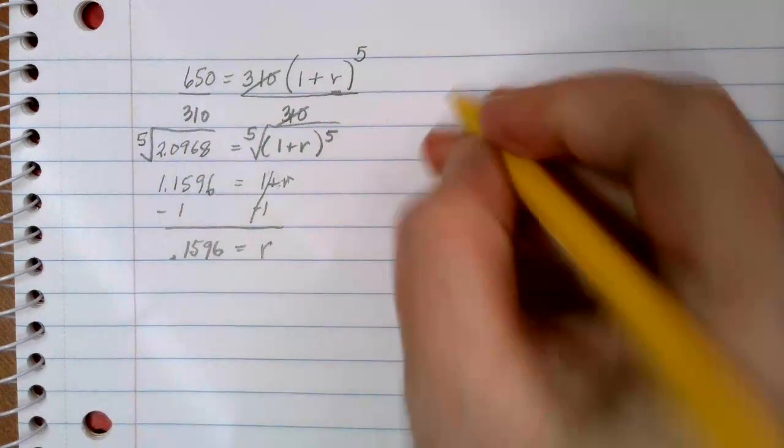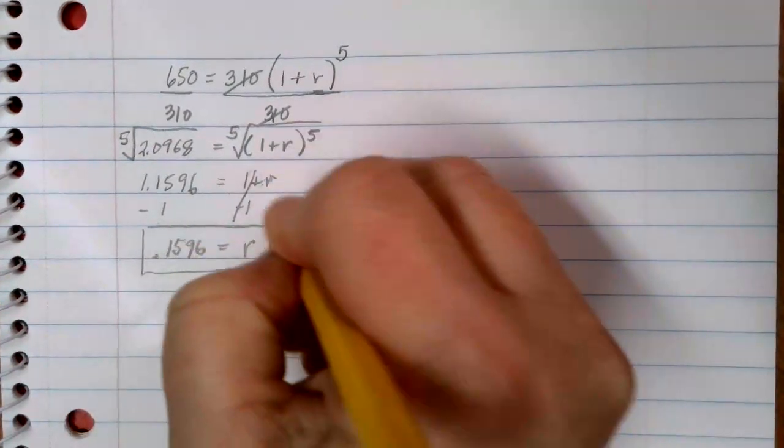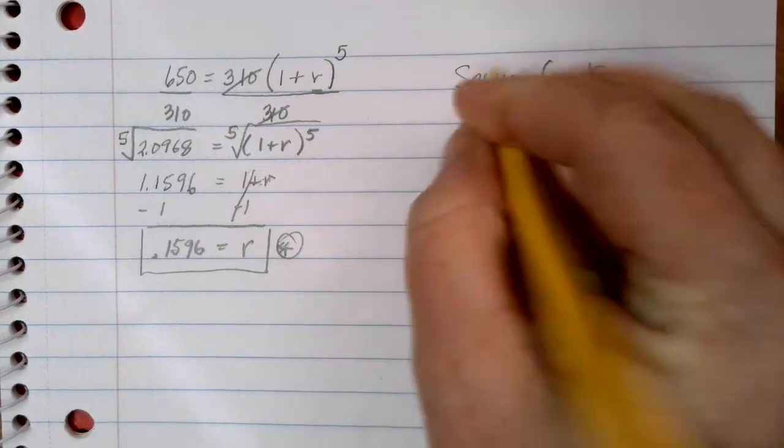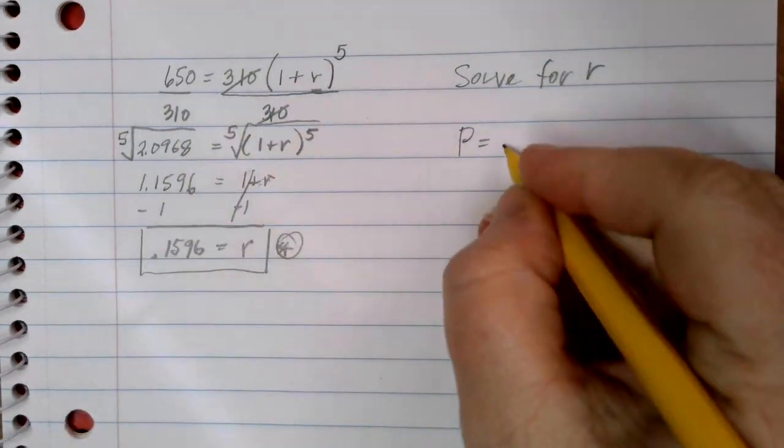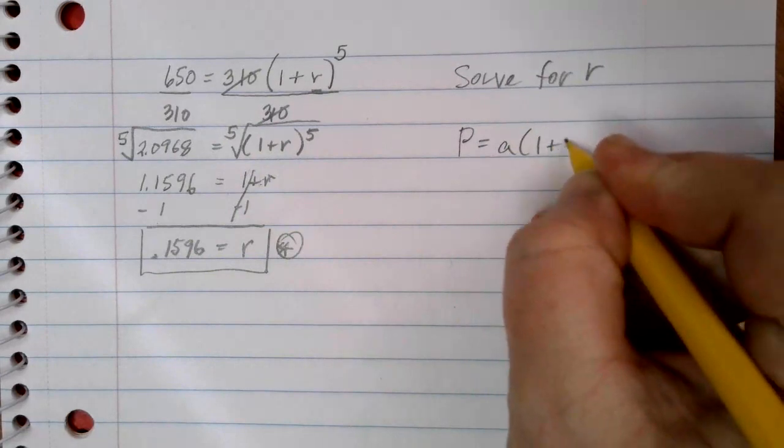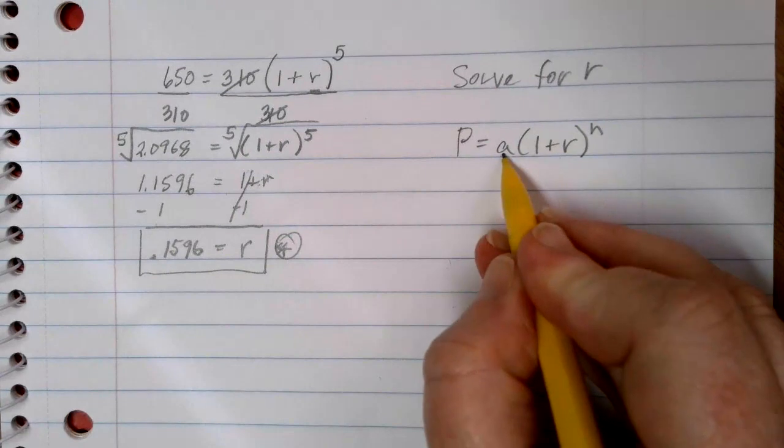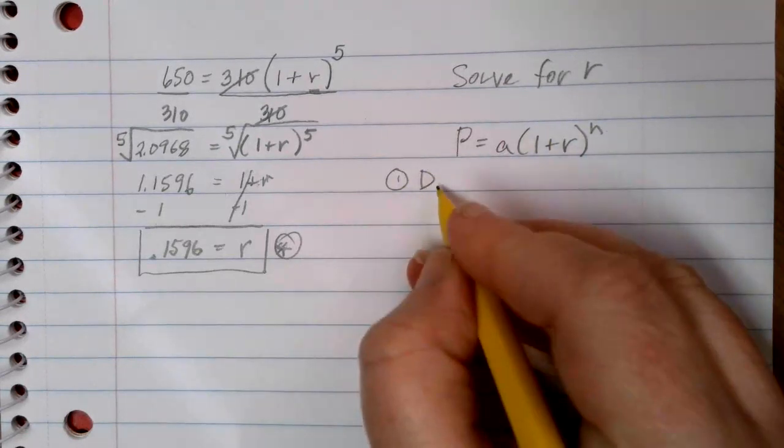So if we are trying to solve for R in any of our exponential equations, I'm going to write out some steps in general, because the order that you do this in and the steps that you do to solve these equations is the same every single time. So here's our general formula. If we want to get the R by itself, we have to get rid of the A, the 1, and the N. So the first thing that you're going to do is divide each side by the A.